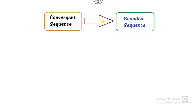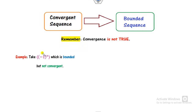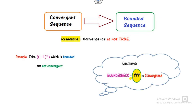But the converse need not be true. For example, consider the sequence (-1)^n — this is a bounded sequence which lies between minus 1 and plus 1, but it is not convergent. So the converse need not be true. Our target is to find a condition which, when imposed on a bounded sequence along with something else, makes it convergent — to identify what condition implemented on a bounded sequence will always make it convergent.